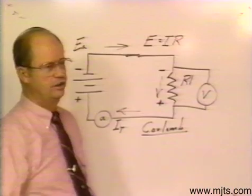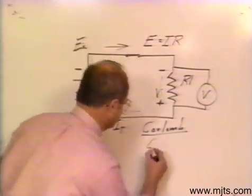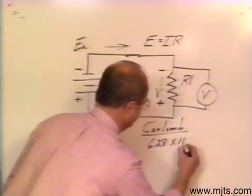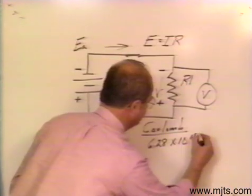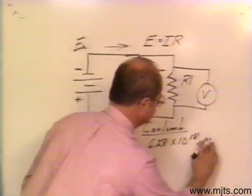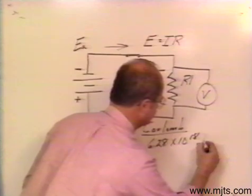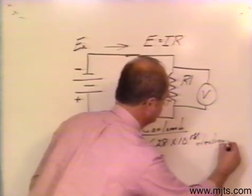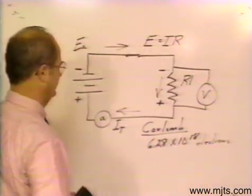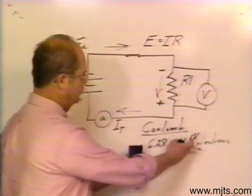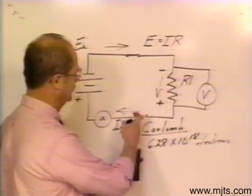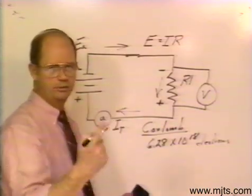A coulomb of electrons represents 6.28 times 10 to the 18th power electrons. In other words, this is a quantity of electrons. If I have that quantity of electrons go through a specific point in my circuit in one second, I have one amp represented.